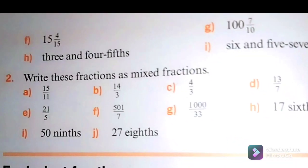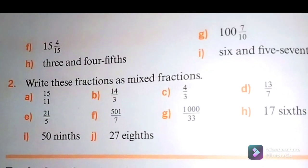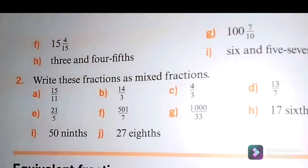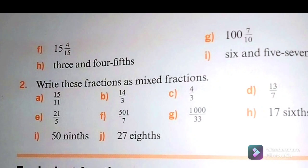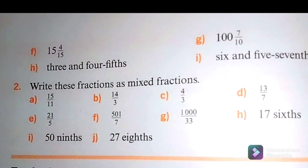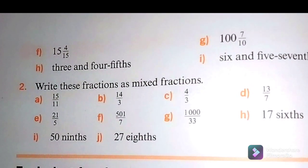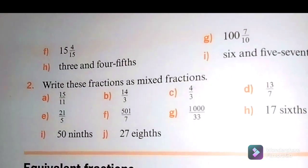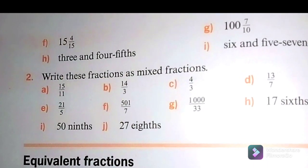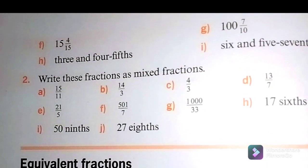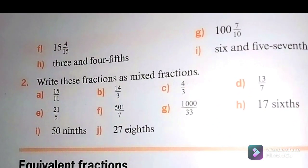Number 2: Write these fractions as mixed fractions — A. 15 over 11, B. 14 over 3, C. 4 over 3, D. 13 over 7, E. 21 over 5, F. 501 over 7, G. 1000 over 33, H. 17 over 6, I. 50 over 9, and J. 27 over 8.